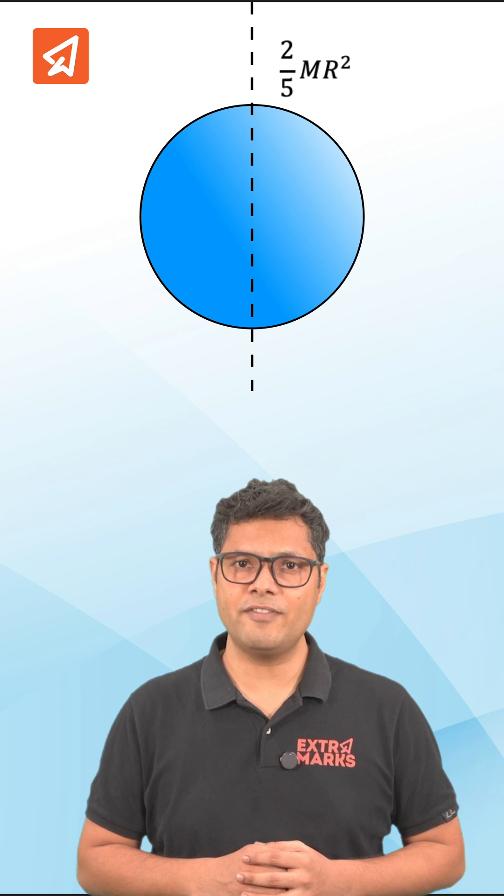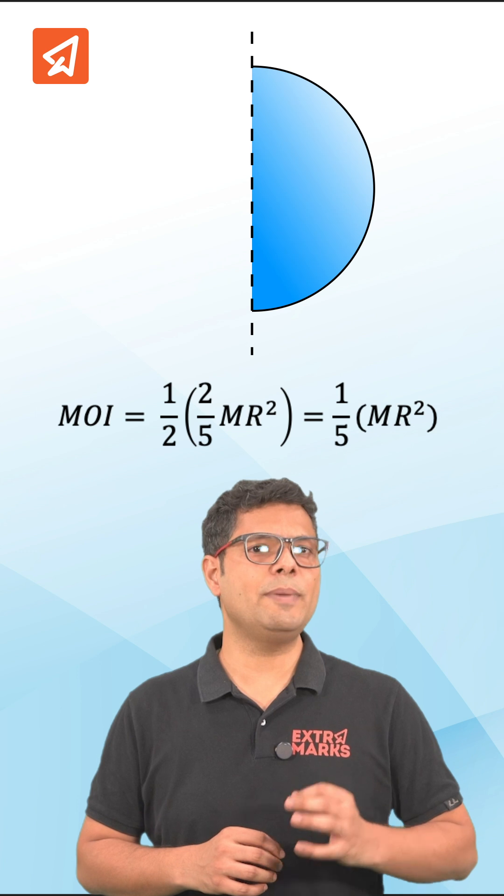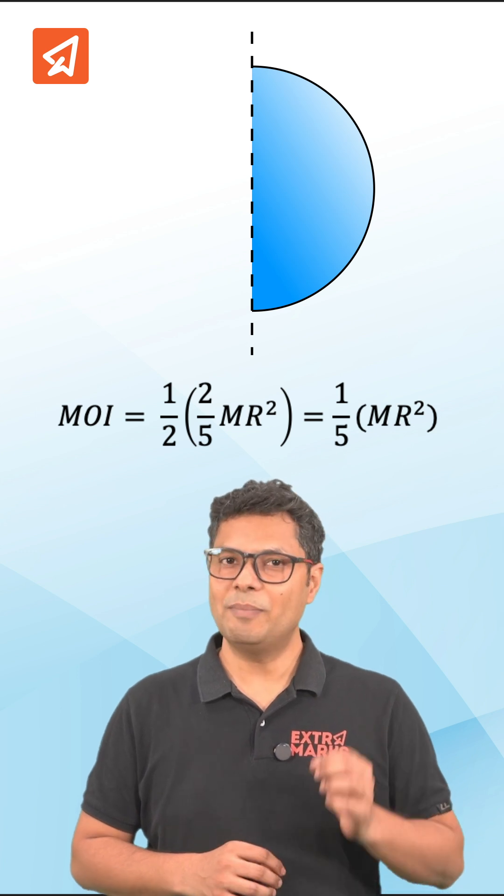Let's see how. The moment of inertia of solid sphere is 2 by 5 m r square. Now if we bisect the sphere like this, the value of moment of inertia will certainly become 1 by 5 m r square. But remember,